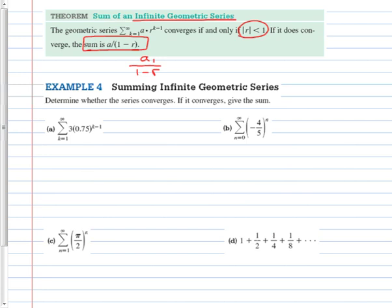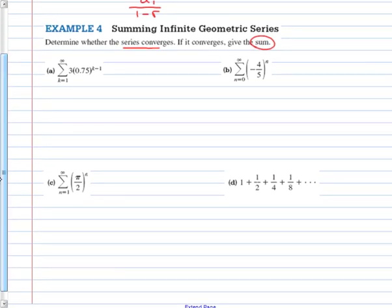How do I know if it converges? If the absolute value of the common ratio is less than 1. Determine whether these series converge. And if they do, figure out what the sum is. First of all, how do we figure out if it converges? I need to know what the common ratio is. Can you look at this and tell me the common ratio? Yeah. 3 fourths, 0.75. The common ratio is 3 fourths, or 0.75. Does it converge? Yes.